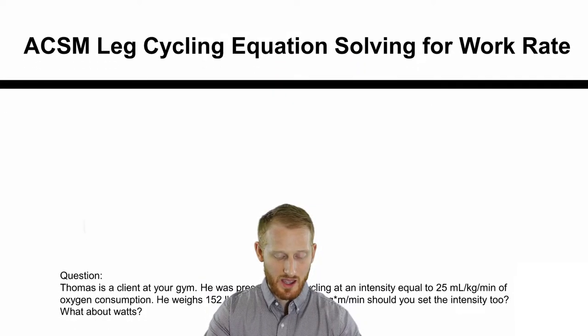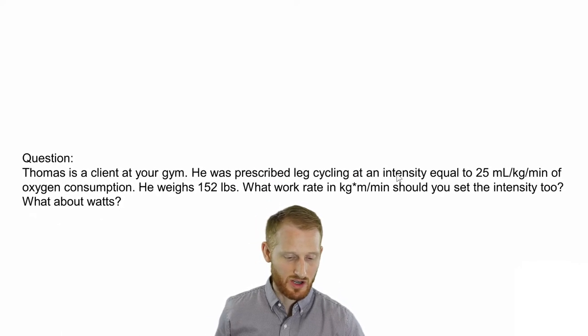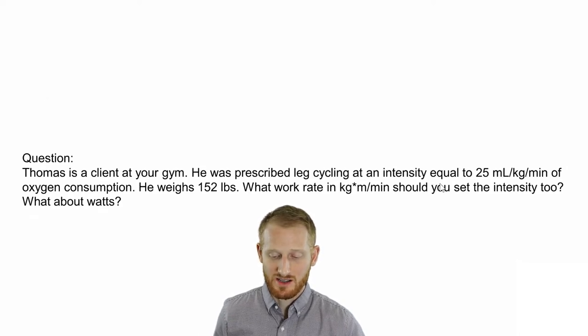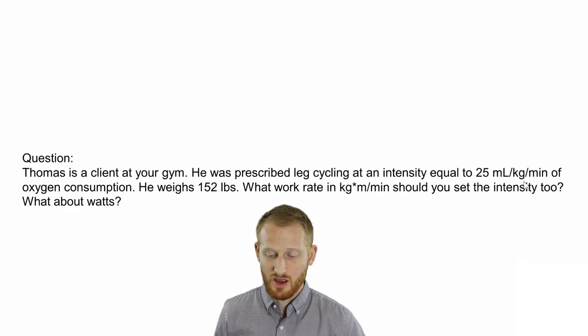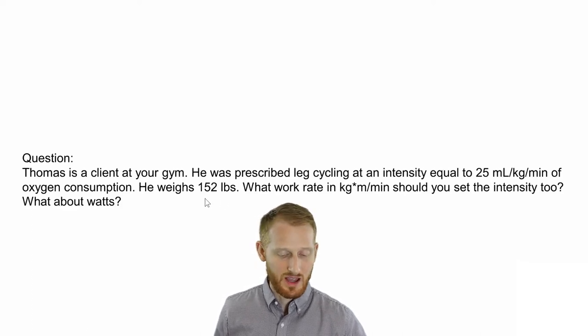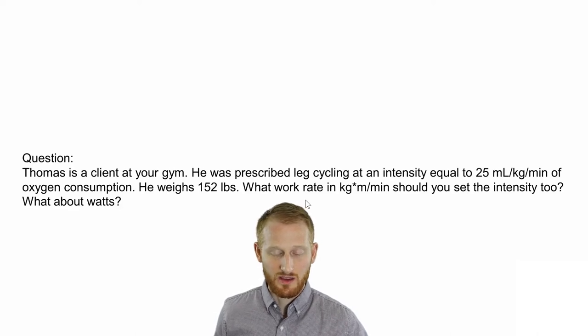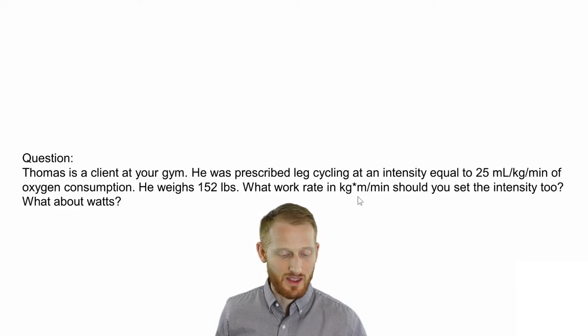Let's use a short question here to help us frame this. Thomas is a client at your gym. He was prescribed leg cycling at an exercise intensity equal to 25 milliliters of oxygen consumption per kilogram of body mass per minute, and he weighs 152 pounds. What would the work rate that you set on the leg cycle ergometer be in kilogram meters per minute, and what would it be in watts?